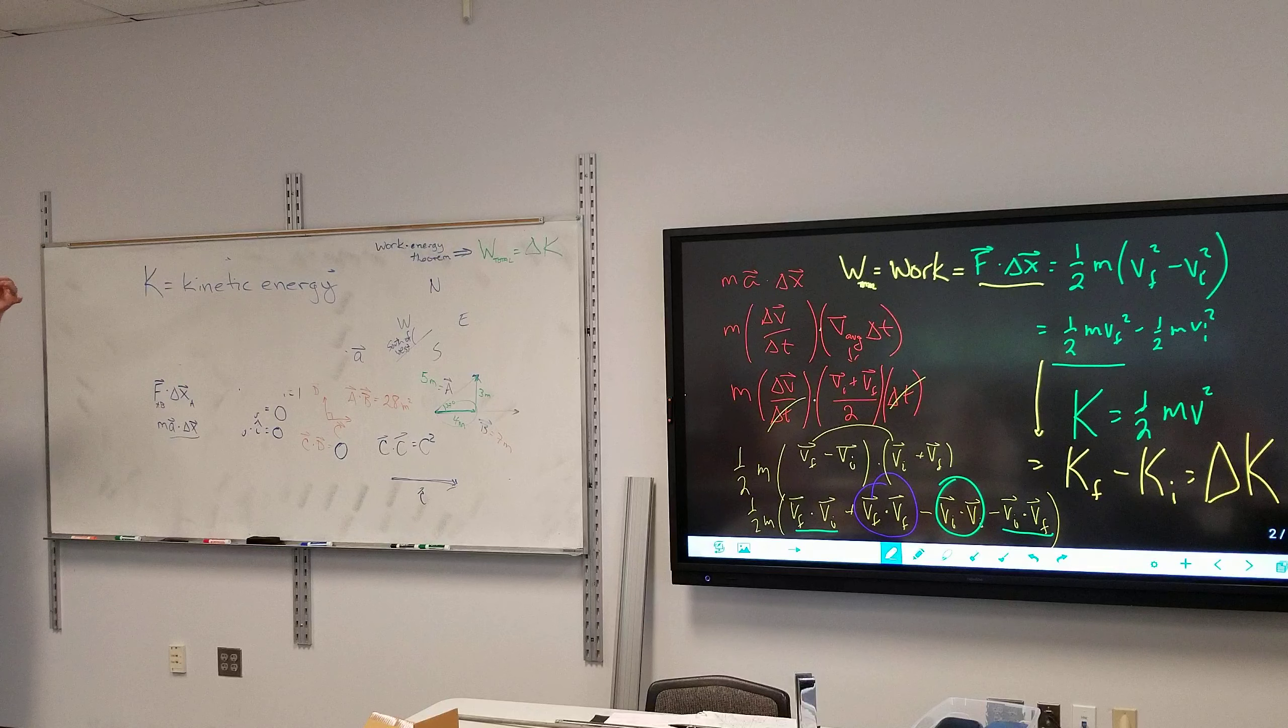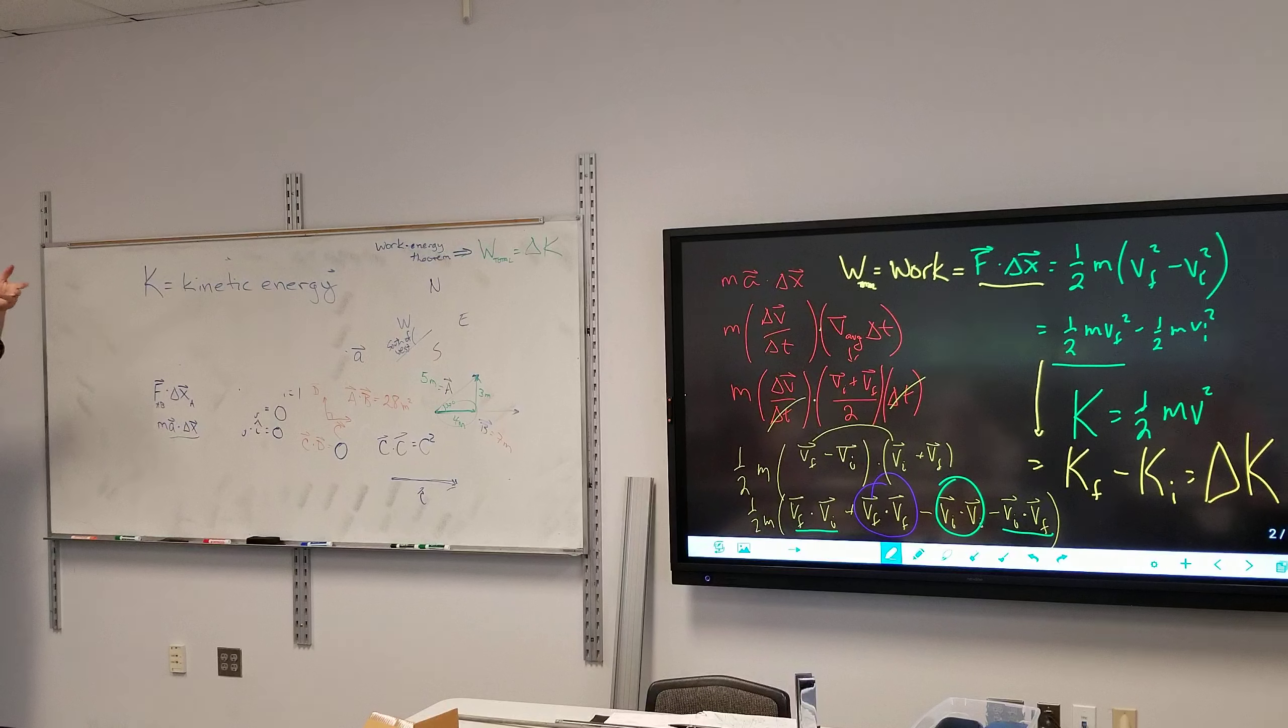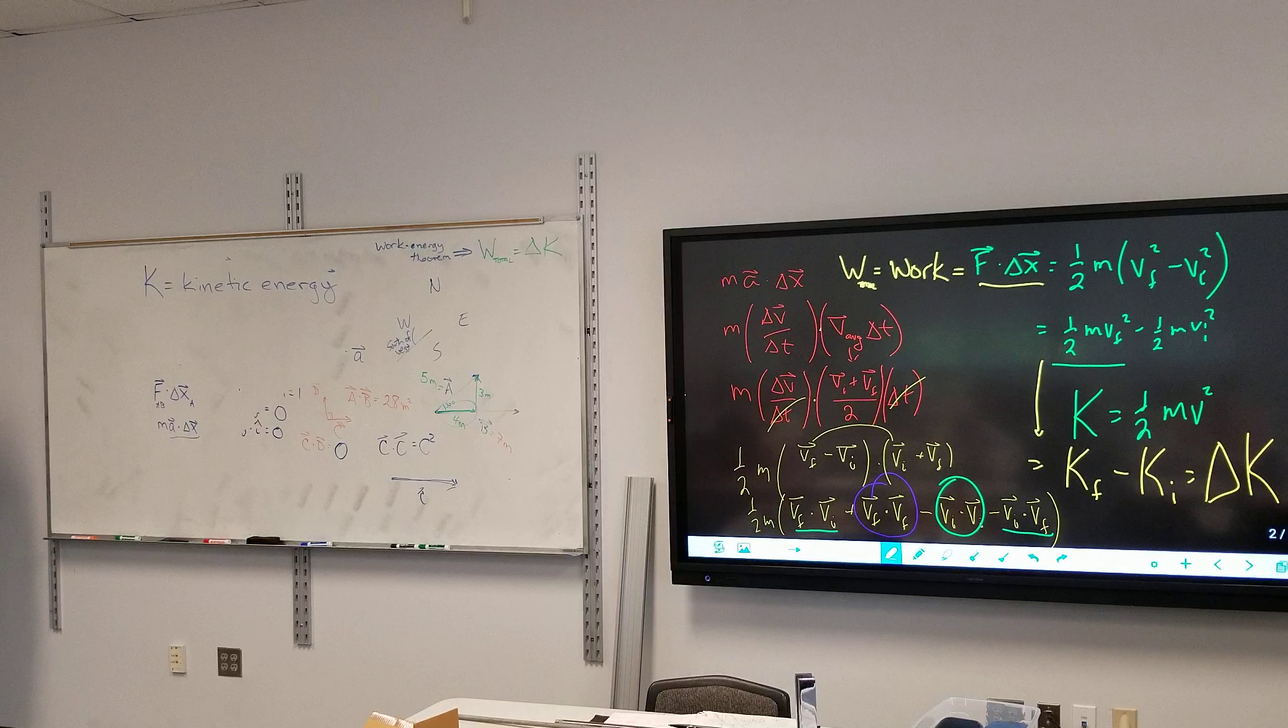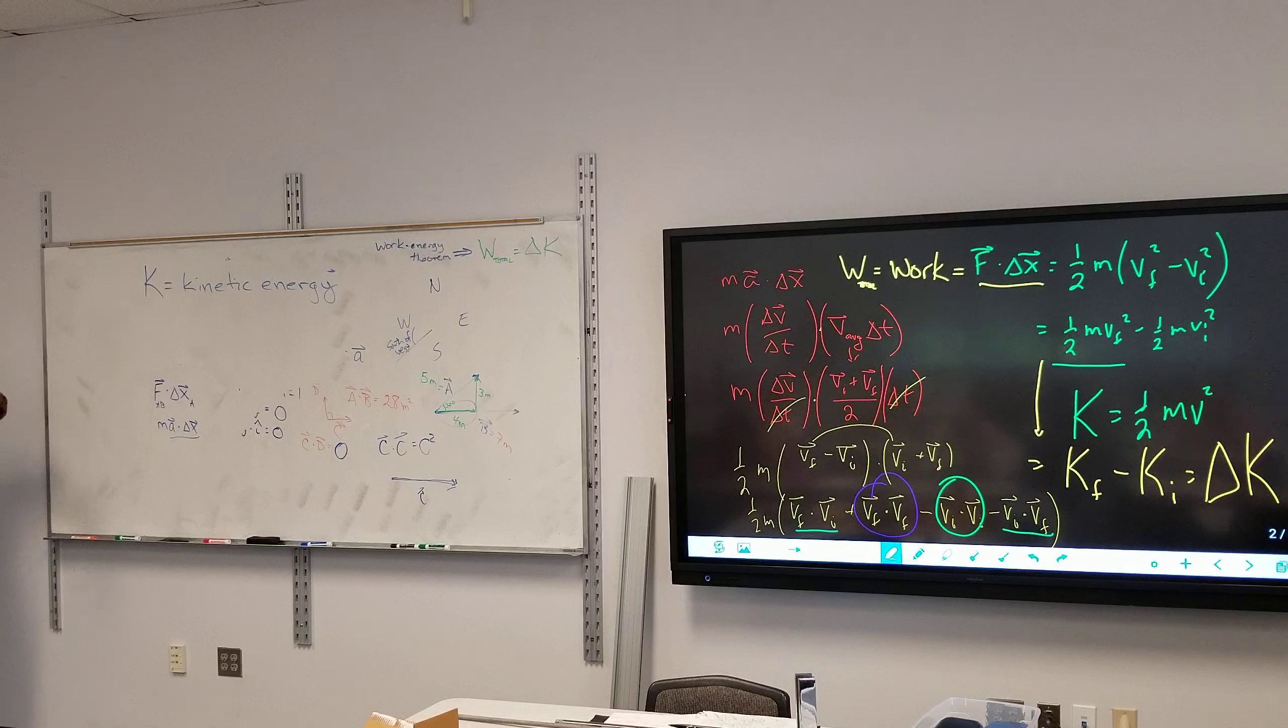So if I take this marker and I let go, work is done to it because the gravitational pull is pulling it down. The gravitational pull pulled it down, gave it a certain displacement. Work was done and the kinetic energy changed, it went from zero to something. So what that theorem is saying is that the work done by the earth on the marker is equal to the change in kinetic energy of the marker.